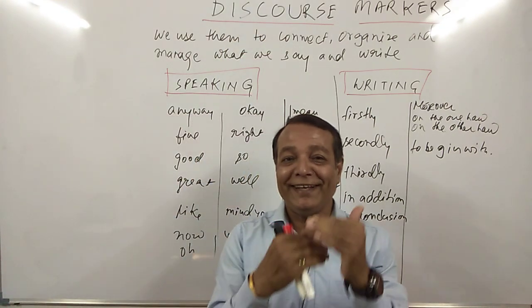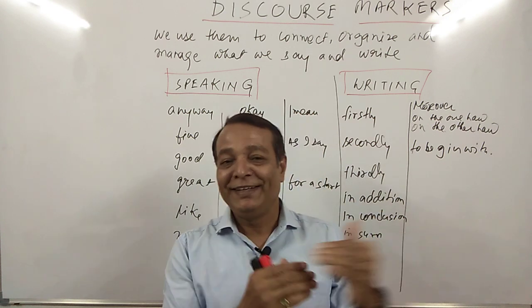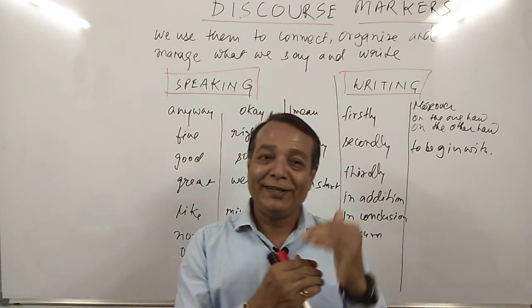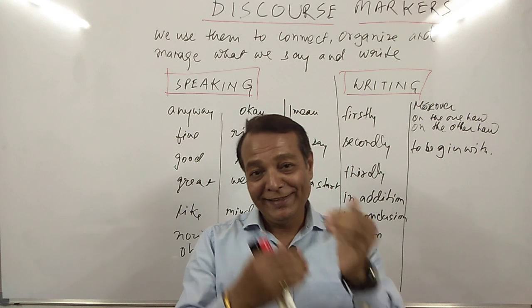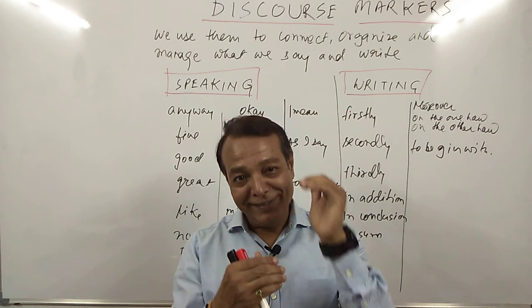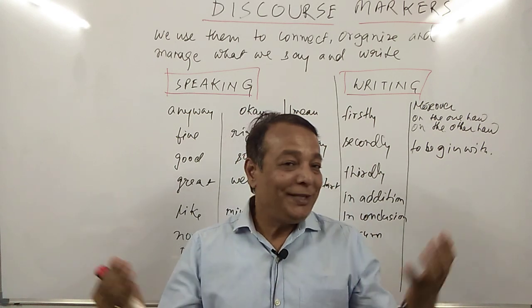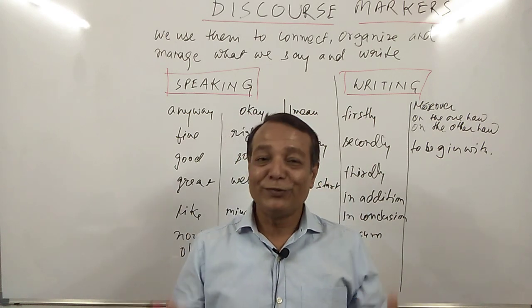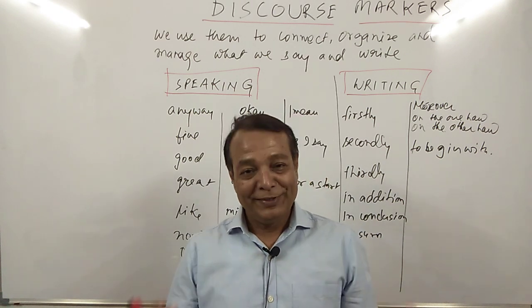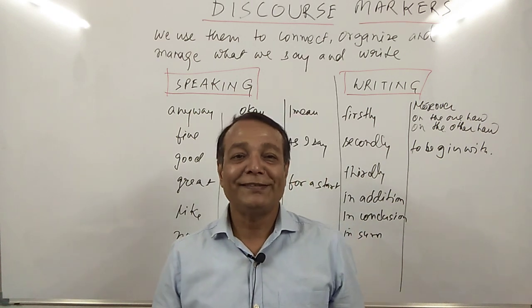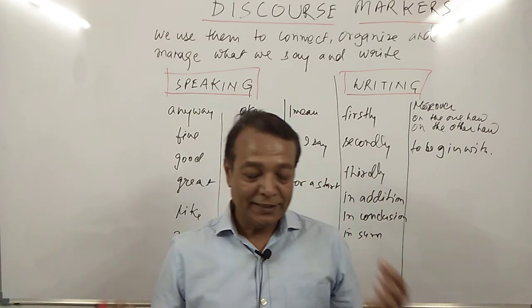Suppose we need 10 words in a sentence or in our language and instead of 10, we use sometimes 15 words — and the reason is discourse markers, because many people use different kinds of discourse markers. But these discourse markers are used by all English speakers.